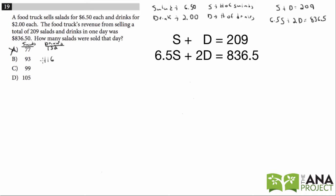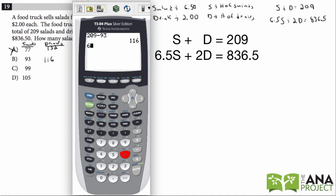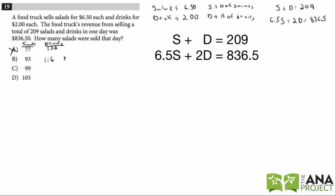Now let's plug these, the salads and drinks, into this equation. 6.5 times 93 plus 2 times the number of drinks, 116, equals 836.50. So answer choice B works.